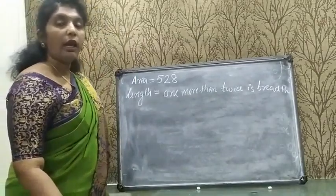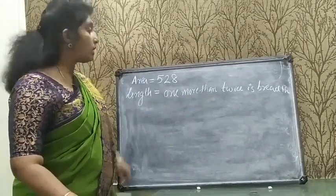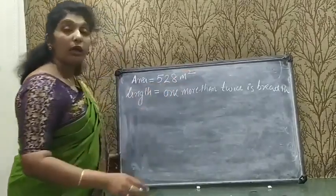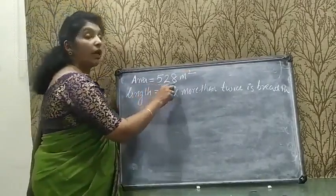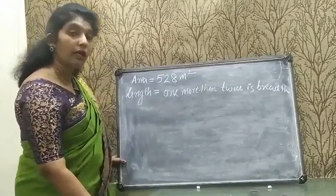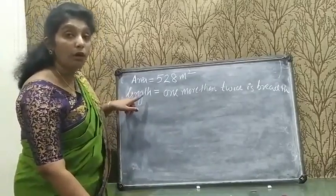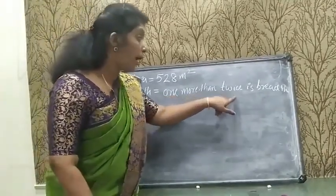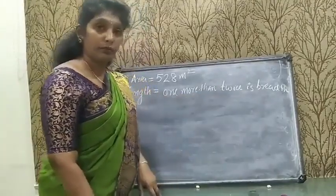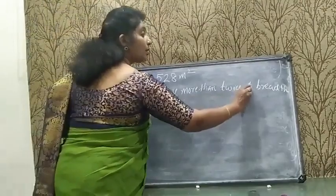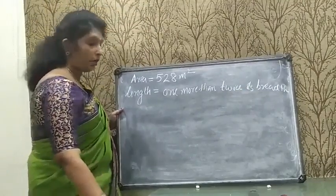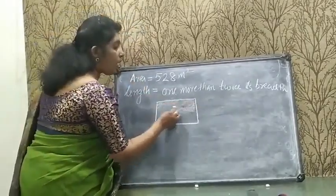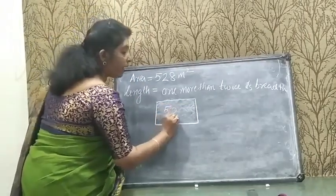The first question: the area of a rectangular plot is 528 square meters. The second condition is that the length of the plot is 1 more than twice its breadth. This means we have a rectangular garden whose area is 528 square meters.